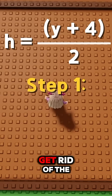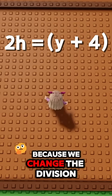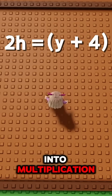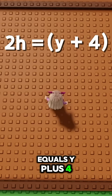Step 1: Get rid of the divide 2 by multiplying both sides by 2 because we change the division into multiplication. Now it's 2h equals y plus 4.